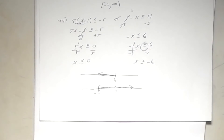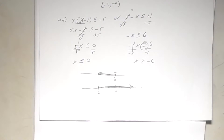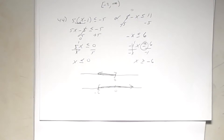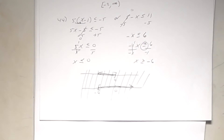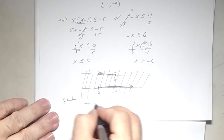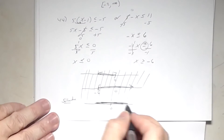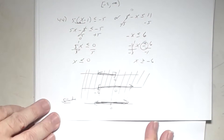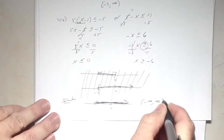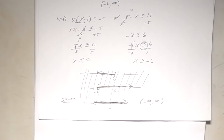Since all real numbers are shaded, on the graph just shade everything with arrows in both directions. Interval notation: parenthesis negative infinity, comma infinity, parenthesis. Notice how easy it was to make a mistake on that second inequality — be very careful with your symbols. That was number 44.